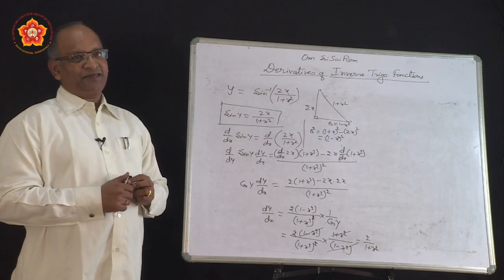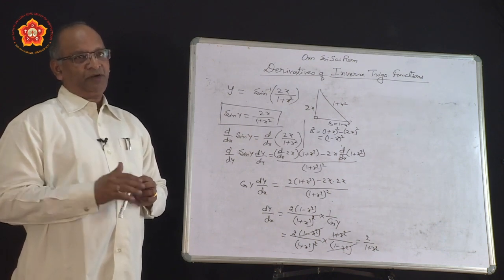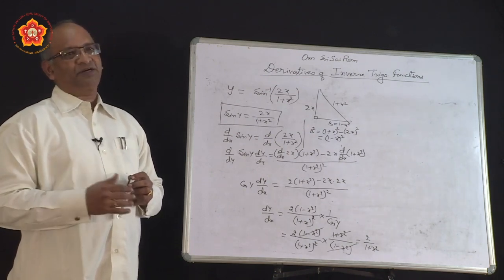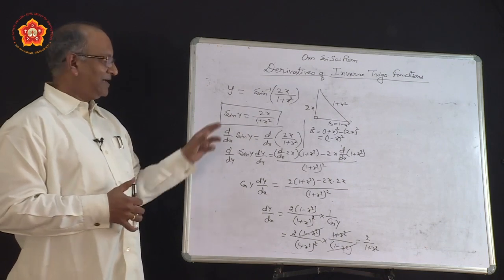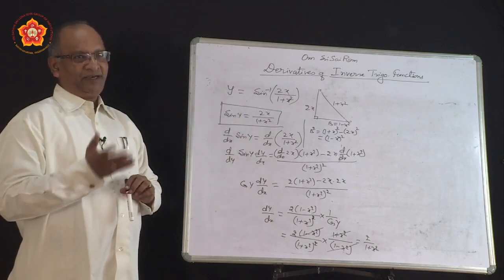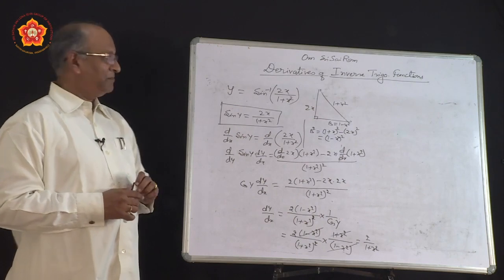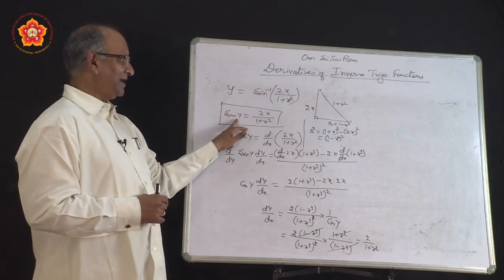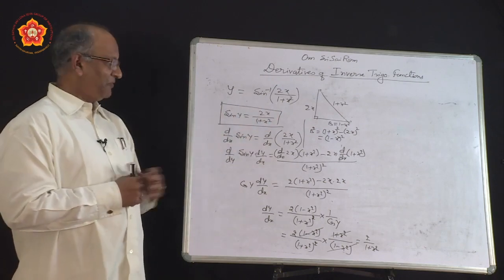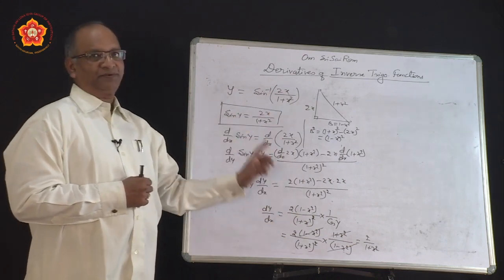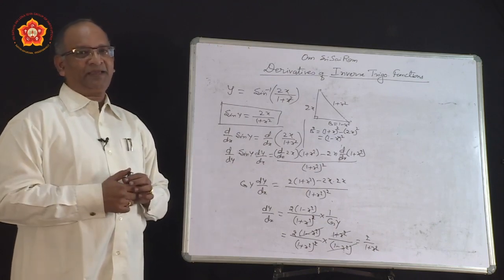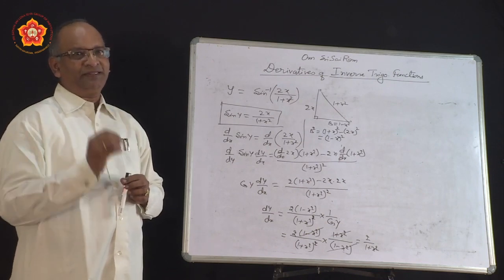In the previous class we discussed implicit functions and now we are going to study derivatives of inverse trigonometric functions. Let us recollect the last problem which we solved. It involved an inverse trigonometric function, and when we got sine inverse on one side it became sine y = 2x/(1+x²). If we follow that method, the solution is quite long. Now let us look at how it can be very simple by making an appropriate substitution.